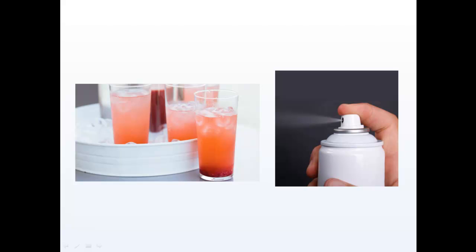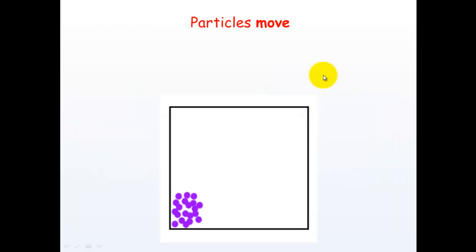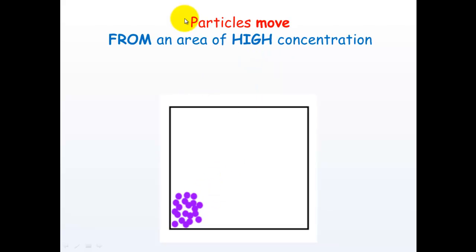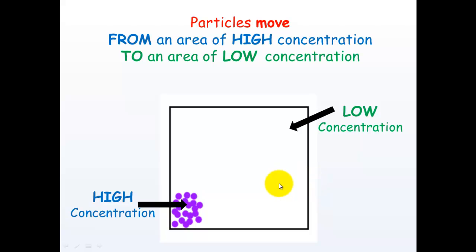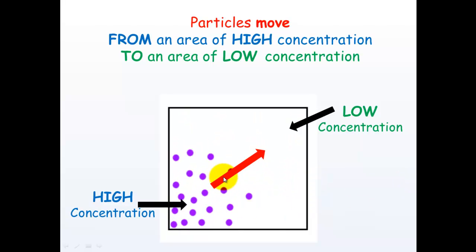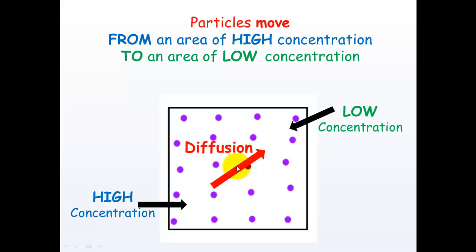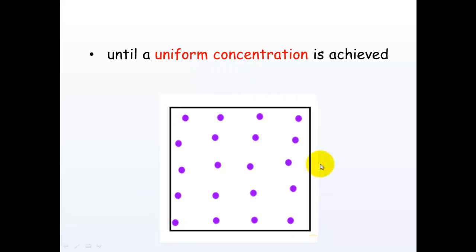Diffusion. If you've ever drunk cordial or sprayed some air freshener in a room, you've experienced diffusion. Diffusion is simply particles that move from an area of high concentration to an area of low concentration. You can see that in this section there are lots of blue particles so it's highly concentrated, and over here there are no blue particles — this is a low concentration. These particles will move from the high concentrated area to the low concentrated area, and this continues until a uniform concentration is achieved.